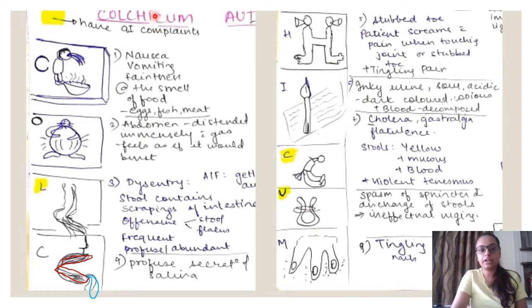Then we have the I. I have drawn a pen. This is an ink pen and you can see a paper here, just to emphasize that this is ink pen. The urine is inky in color. So there is inky urine, sour, acidic, dark colored, copious with blood which is decomposed. So you can almost think of this as a red or brownish to ink colored urine.